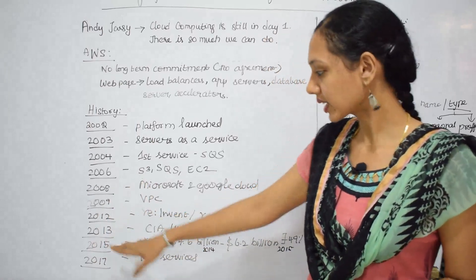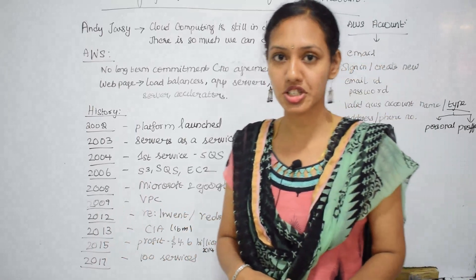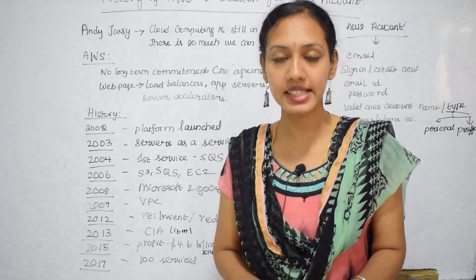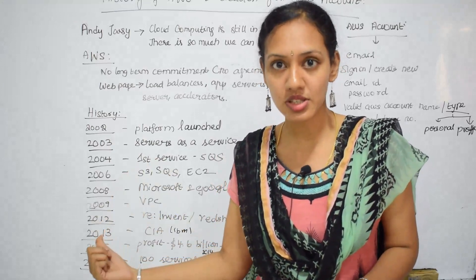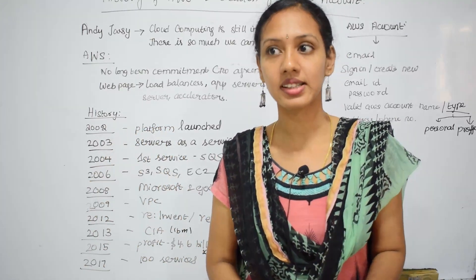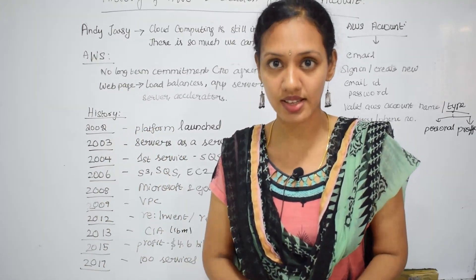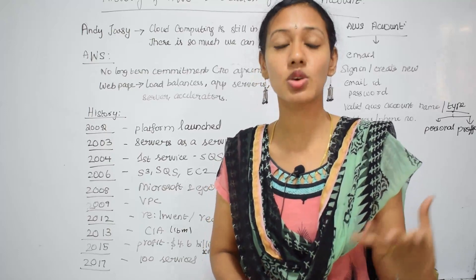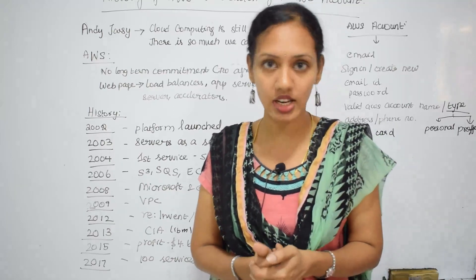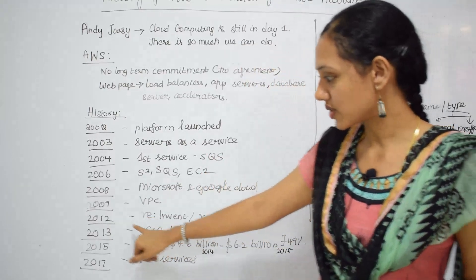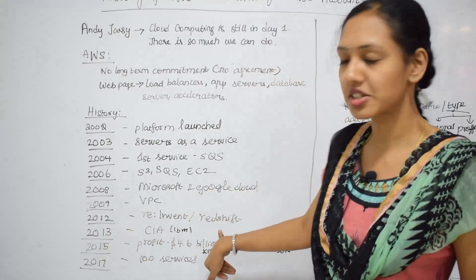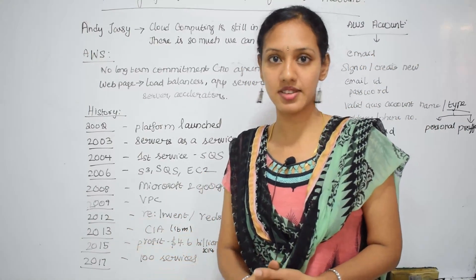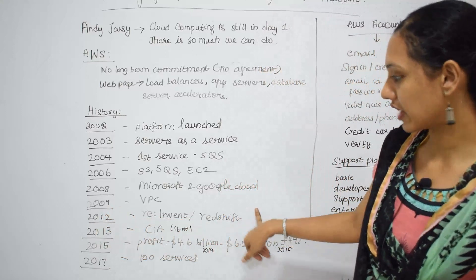In 2012, the first re:Invent conference was launched. re:Invent is the AWS developer conference, held yearly in Las Vegas. From 2012 until today, it is a yearly event where they announce new AWS services and discuss what is new in AWS and Amazon. Also in 2012, Redshift was introduced — Amazon's petabyte-scale data warehousing service — which was a huge success for AWS.